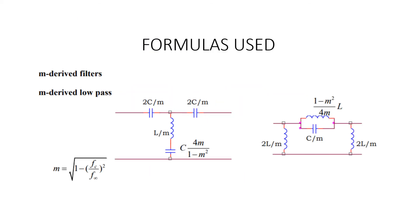Next are the formulas used in all filters: M-derived low pass, M-derived high pass, and M-derived band stop. For the M-derived low pass filter, with T and pi network circuits shown, the value of M is equal to the square root of 1 minus (Fc / F∞)².